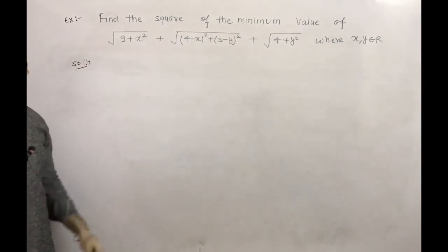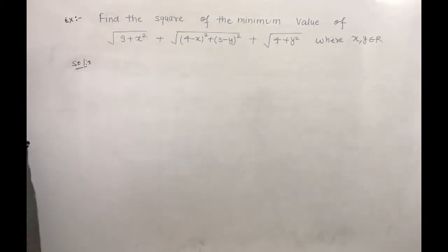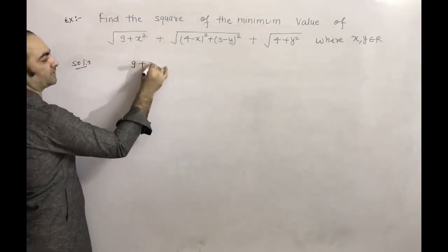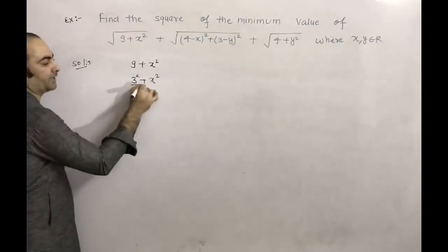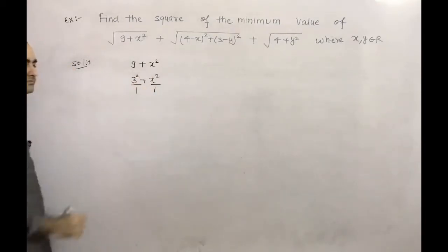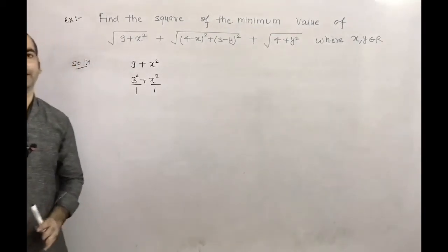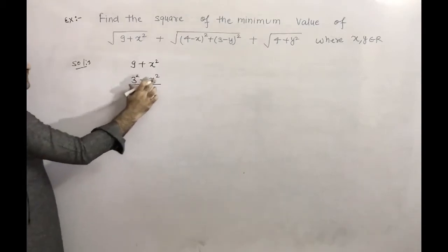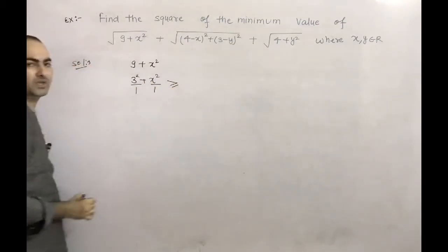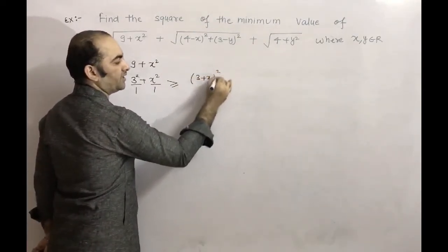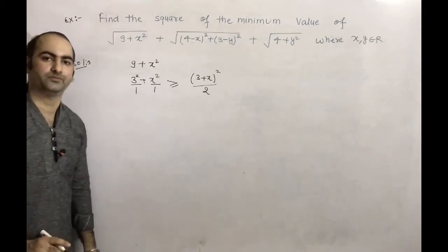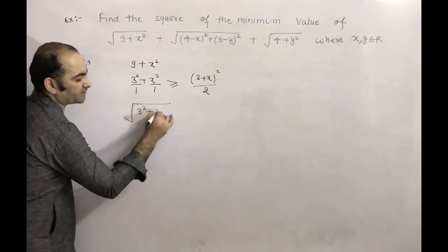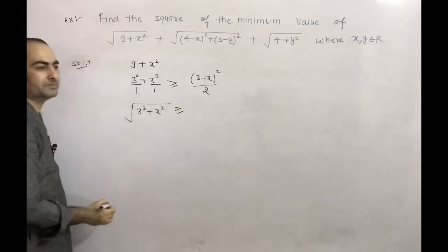We will find the minimum value. First, we look at √(9+x²). We can write 9+x² as 3²+x². We will use the T2 (Cauchy-Schwarz) inequality here: (3²+x²)(1²+1²) ≥ (3+x)². So √(3²+x²) ≥ (3+x)/√2.